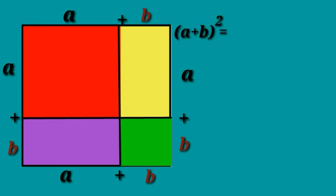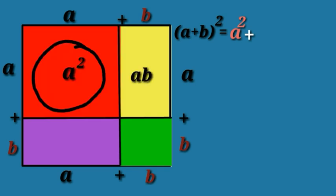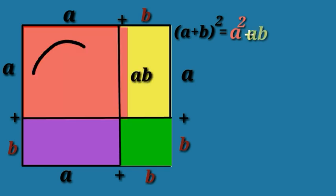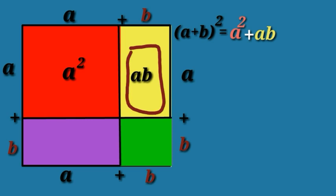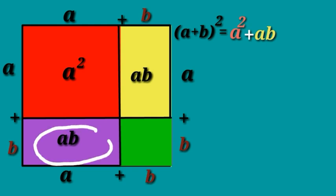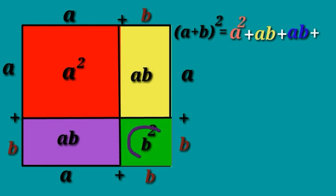So first of all, let us take red one. Here, a into a is a². Another one is the yellow box: a into b is ab. And another one, a into b is ab. And last one, b into b. Here, b².